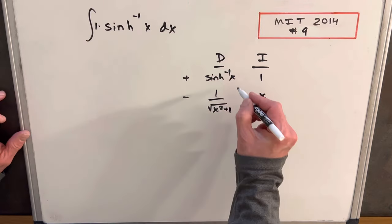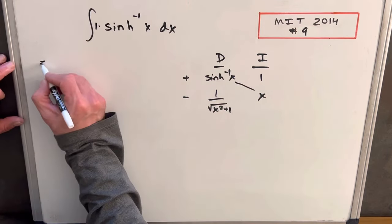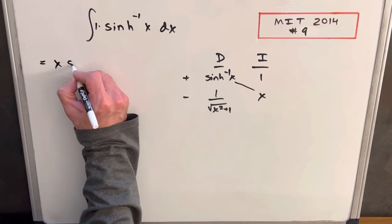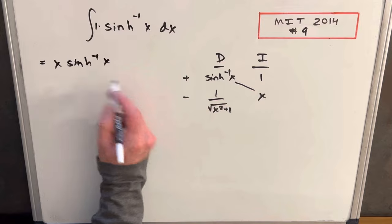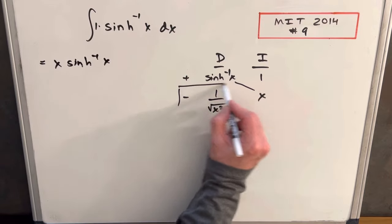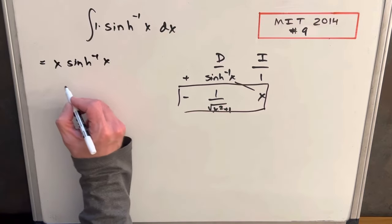So on the diagonal we have part of our answer, so we can actually just write that down now. We're going to have x sinh inverse x, but then we're going to have this row here is going to be another integral. So we need to find this.